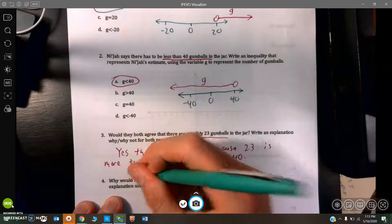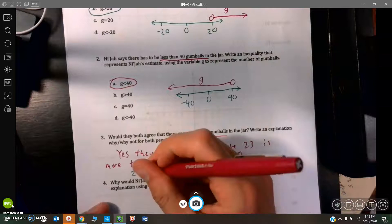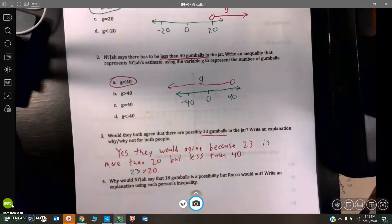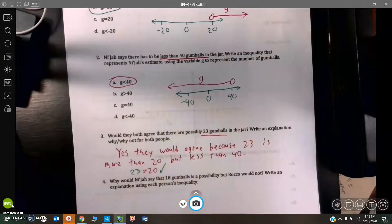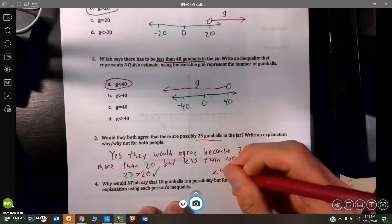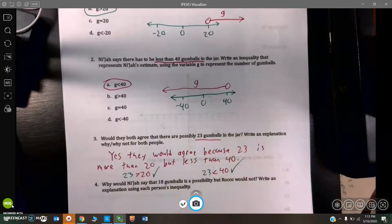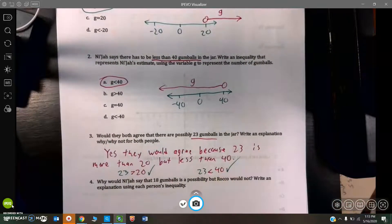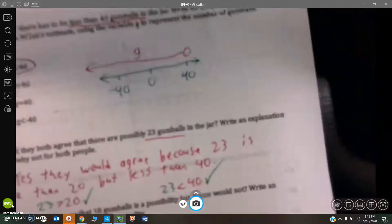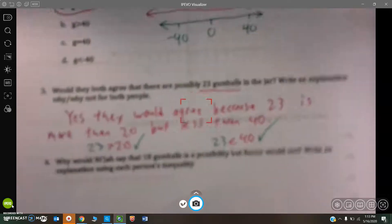Here's McHale's. G is greater than 20. So, 23 is greater than 20. Well, that's true. So, it makes his inequality true. And then for Niza, it was the number of gumballs is less than 40, and 23 is less than 40, so it makes it true. That's how you can always check your work to make sure that that number is, in fact, a solution to inequality for substituting in.